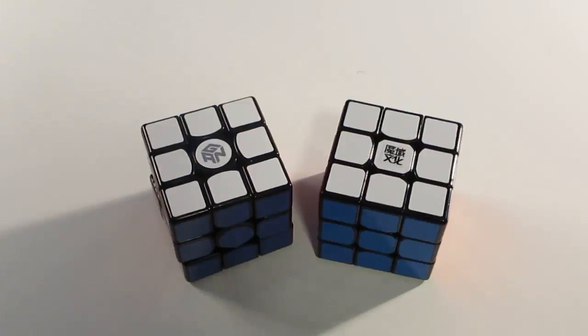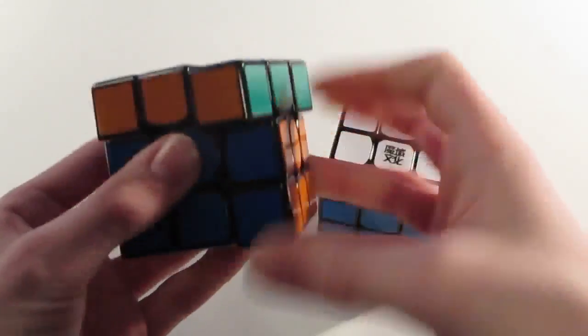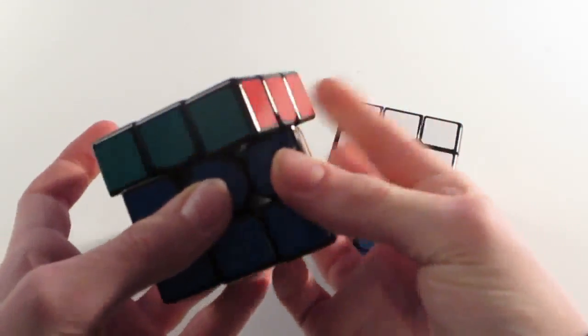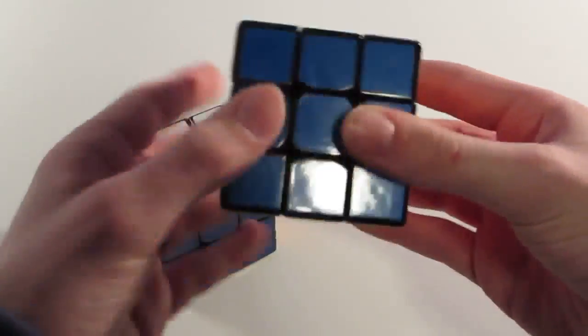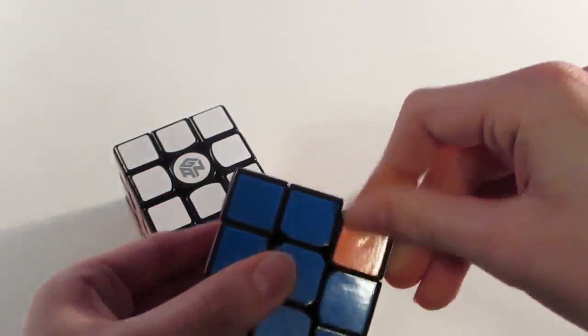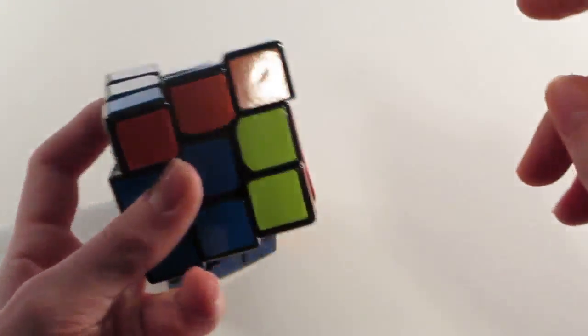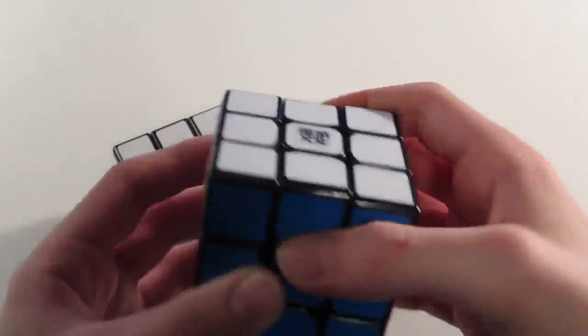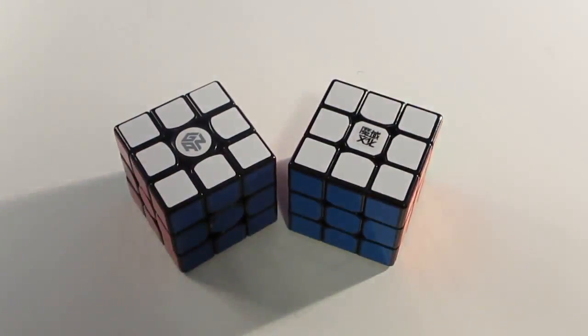Now for any popping or any issues like that. Neither one of these cubes pops at all, so there's nothing really to go over much there. They never pop, and they both have the new squared-off corner design. So corner twists are very rare if they happen at all, which I don't really think they do. Neither one of these cubes really pops or corner twists.